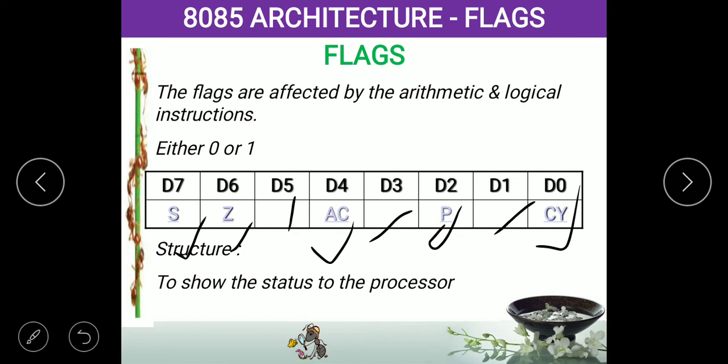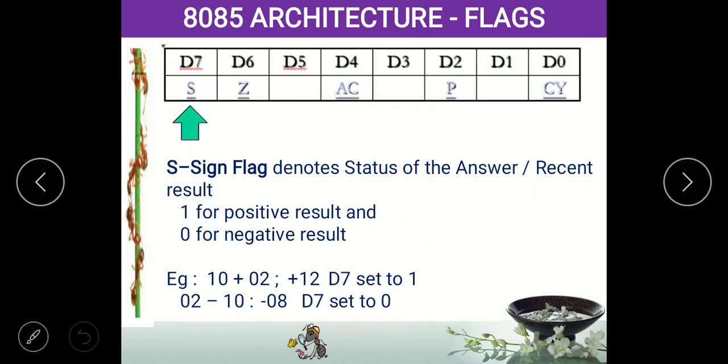The flags are affected by arithmetic and logic operations. We will see them one by one. The first flag is the S flag — the sign flag. As the name indicates, it gives the sign for the output of the processor. Suppose you are adding 10 plus 2 — the answer is plus 12. That plus sign is indicated by this flag.